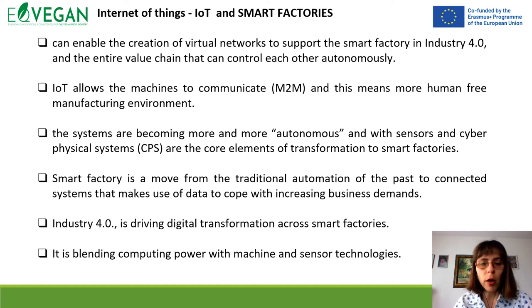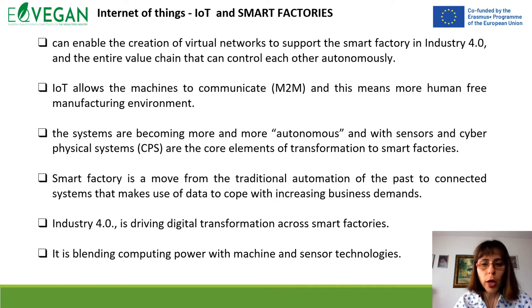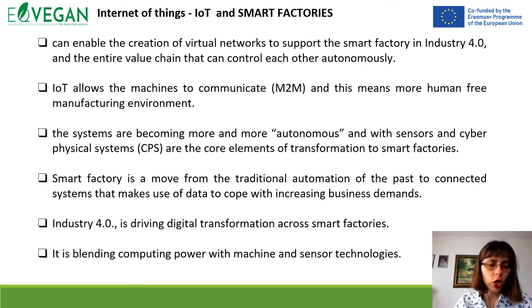By testing processes with digital twins and using different kinds of components, we can optimize processing and switch from virtual to real processes. Internet of Things also allows machines to communicate with each other, enabling a more human-free manufacturing environment — machine-to-machine communication. Systems are becoming more and more autonomous, and with sensors and cyber-physical systems as core elements of transformation, we can achieve smart factories.